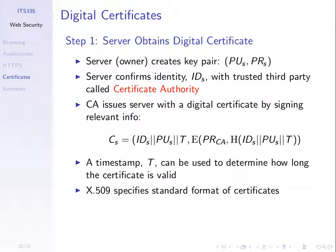Last week we saw an example: when you access a website, the server sends you its certificate. The server creates their key pair, confirms their identity with the authority, and the authority issues a certificate by signing it. The general concept: we have the identity of the server, the public key, a timestamp indicating how long the certificate is valid for, and the signature component — all of that information hashed and encrypted with the private key of the authority. The format commonly used on the internet, and in the homework, is called X.509, which specifies the format of the certificate.